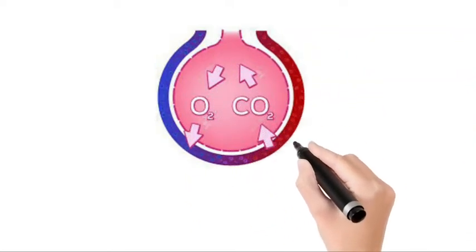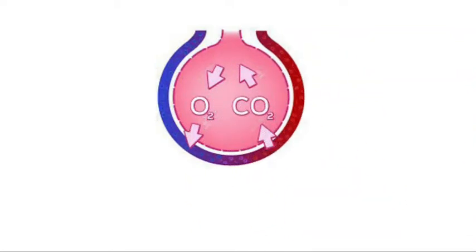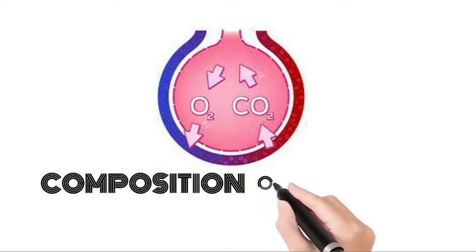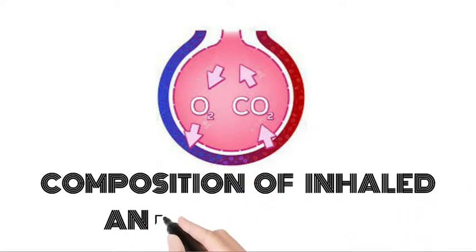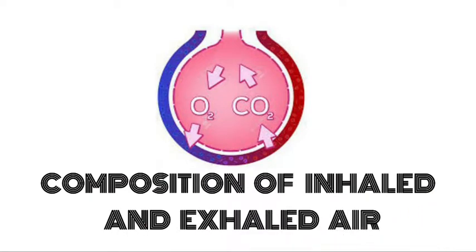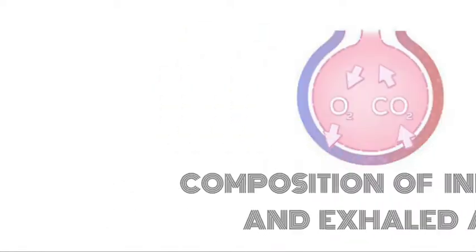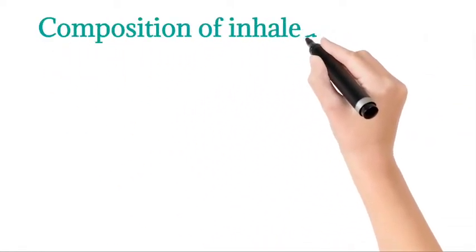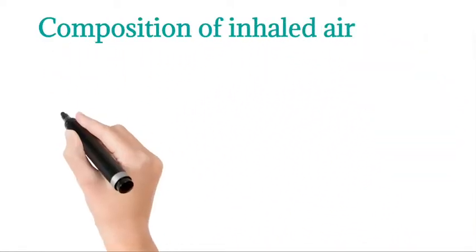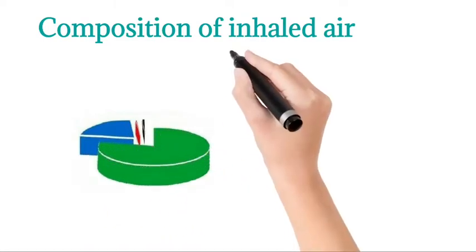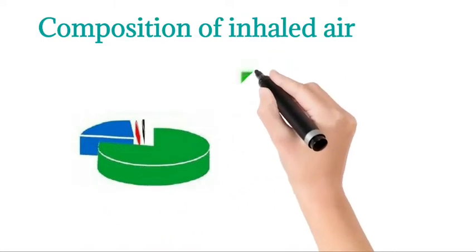Today in our lesson we are going to learn about composition of inhaled and exhaled air. Let's start with the composition of inhaled air. See the pie chart below — in the pie chart, the green color represents nitrogen gas, which is about 79 percentage in inhaled air.